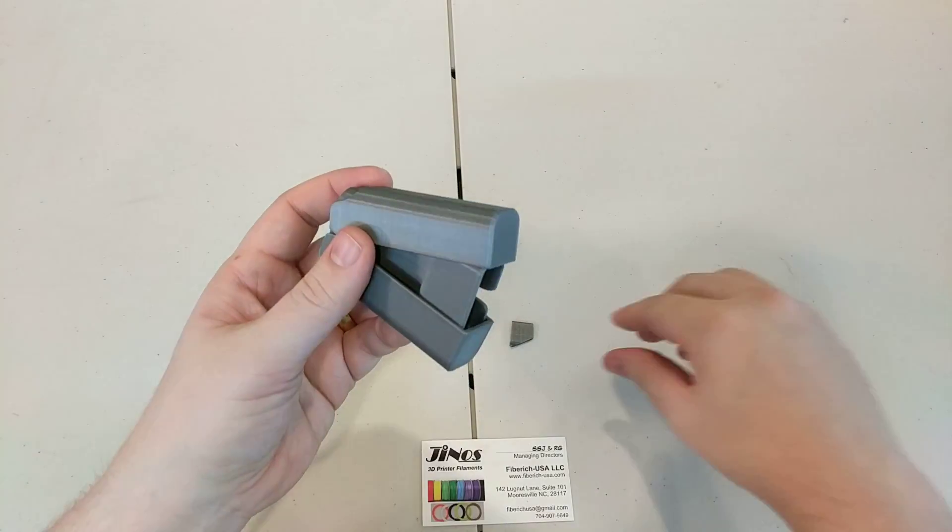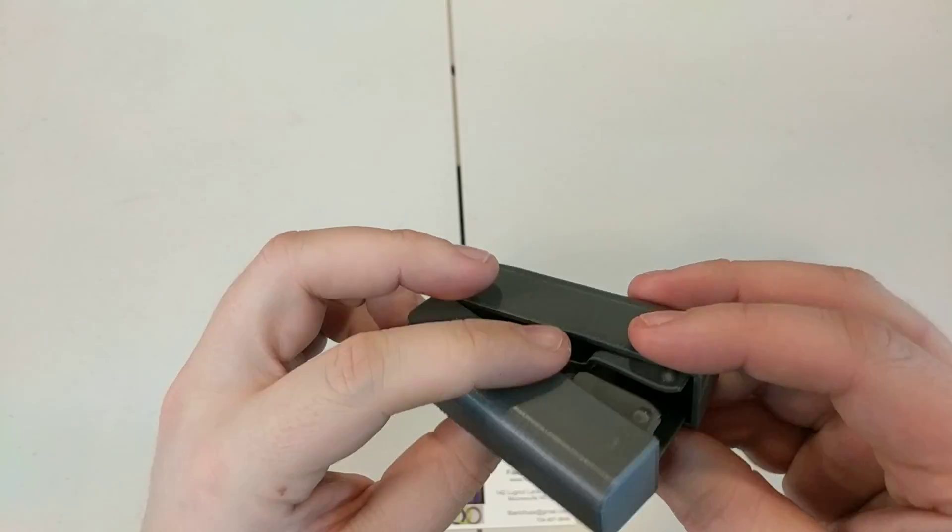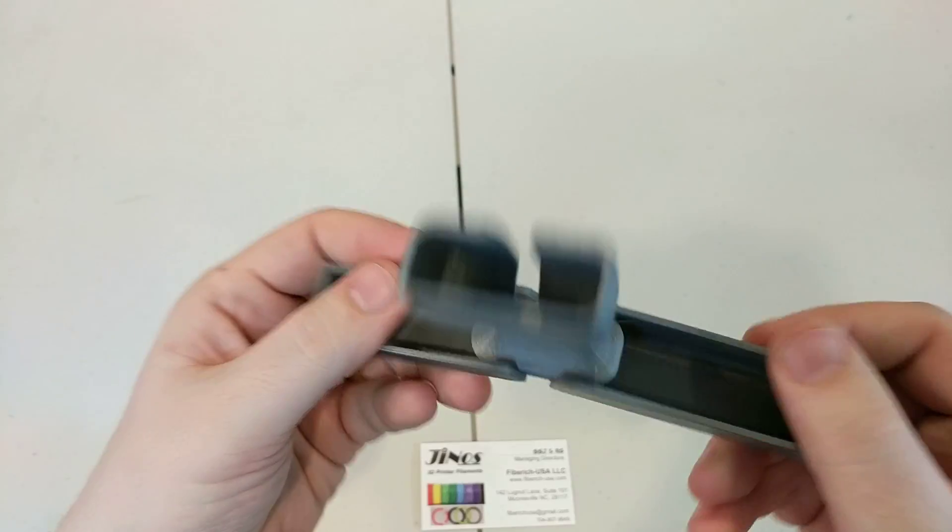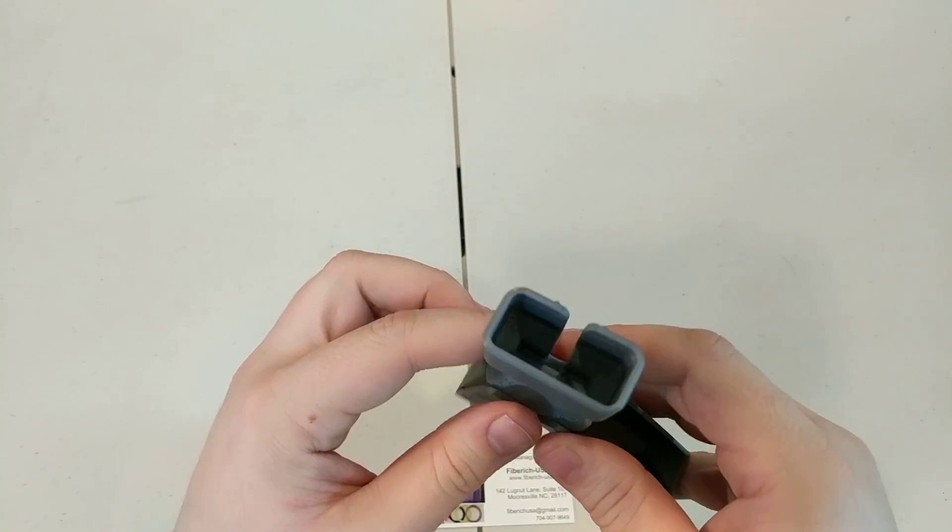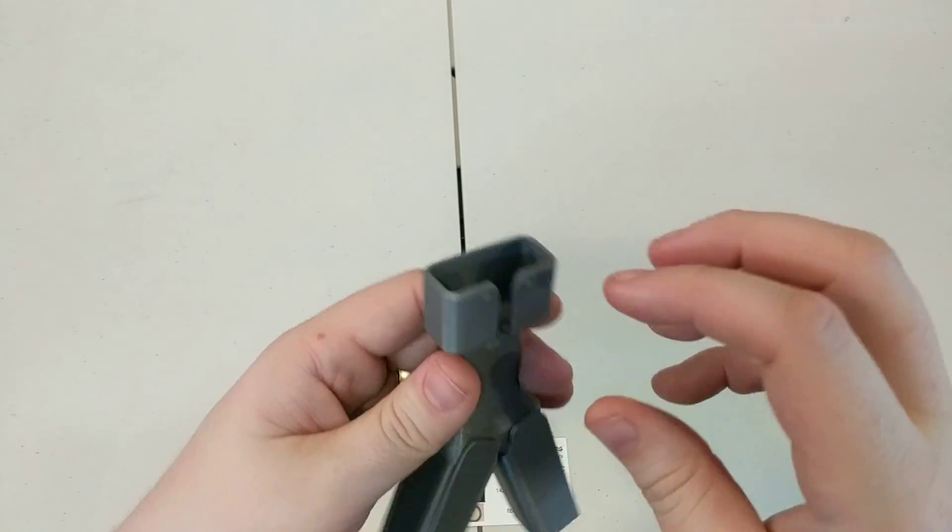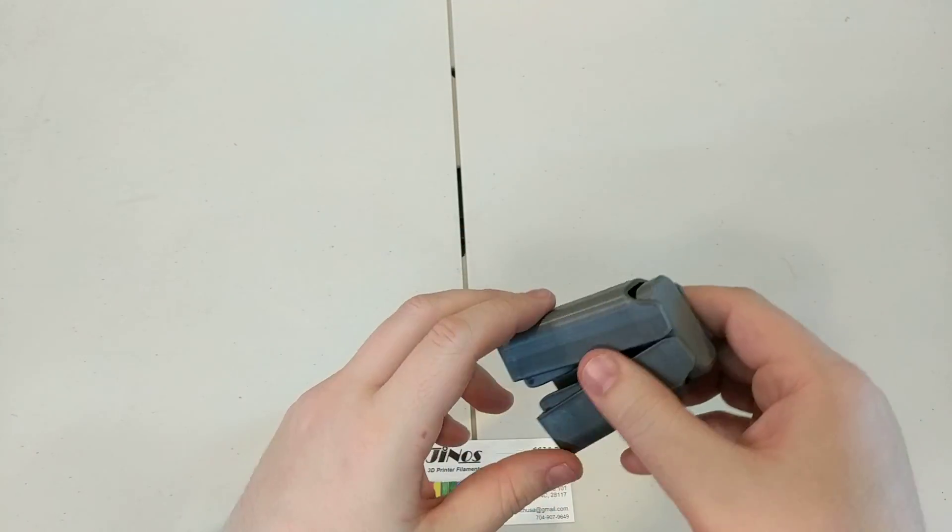This is a nice print, but this is done quick. This is a 0.2 layer height and 60 millimeters a second with only two walls. But this is for a pair of earbuds. Put a pair of earbuds here, wrap the cord around, close it up. Cool.